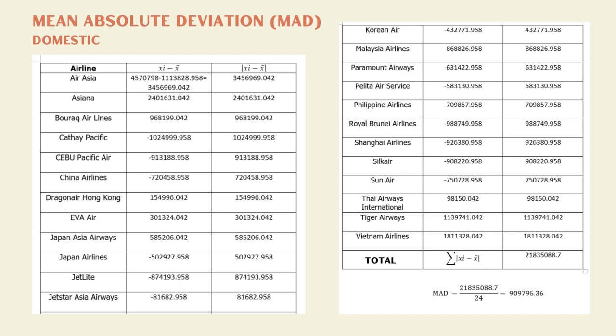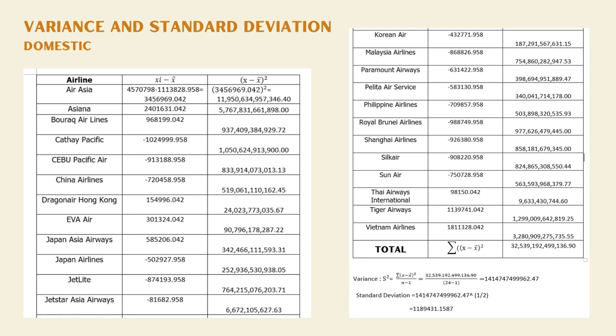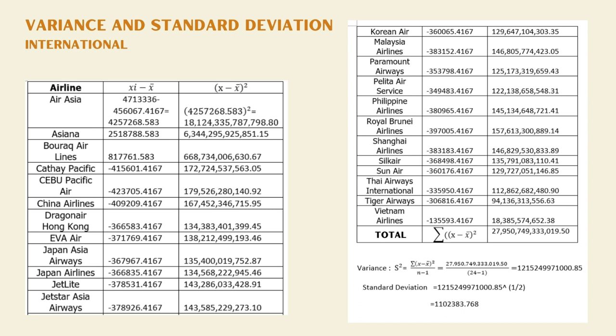For the mean absolute deviation (MAD), the domestic value is 909,795.36. For the international MAD, it equals 632,818.2304. Next is variance and standard deviation. The variance for domestic is 1,414,747,499,962.47 and the standard deviation is 1,118,943.1587. For international, the variance equals 1,215,249,971,000.85 and the standard deviation is 1,102,383.768.